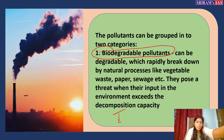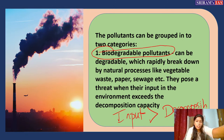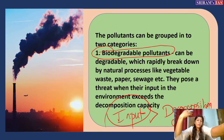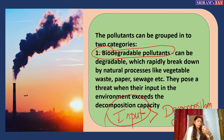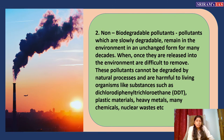The problem with biodegradable pollutants arises when the input — what you are dumping — is greater than the decomposition capacity. For example, when you are dumping more sewage waste into a river than microorganisms can decompose, that becomes the problem. This is what occurs in most cases related to sewage and similar waste.